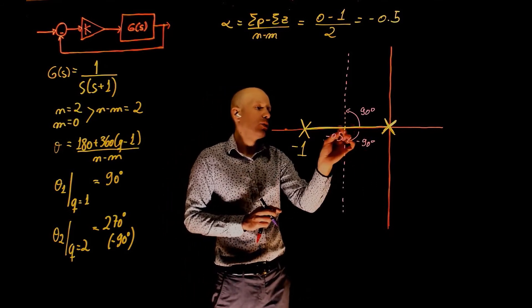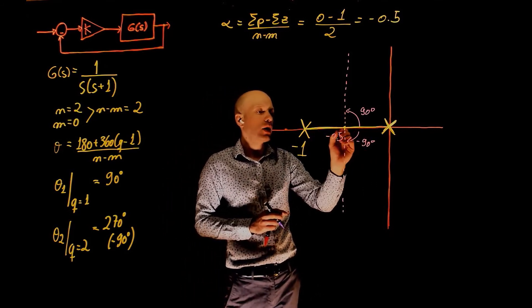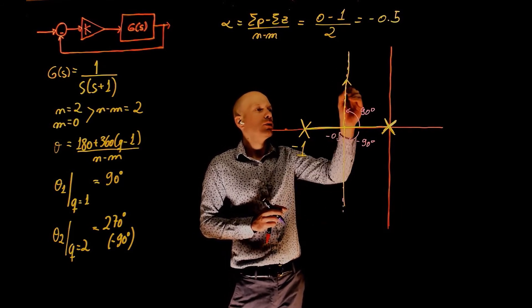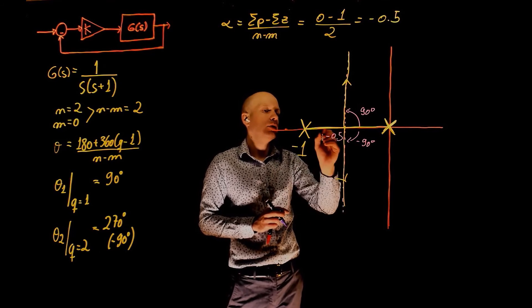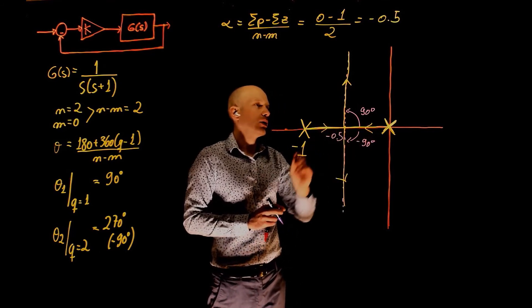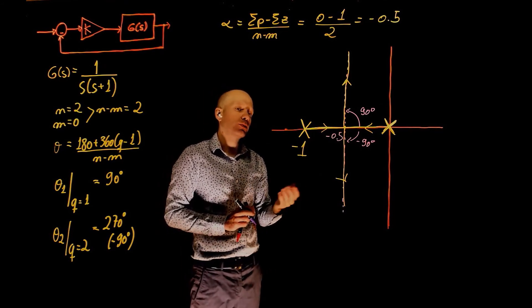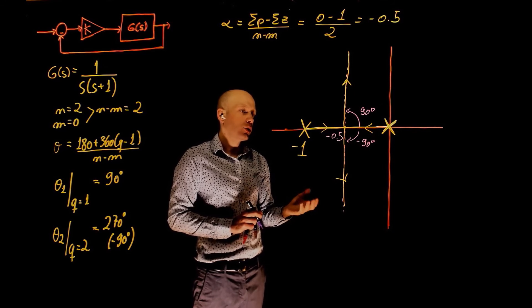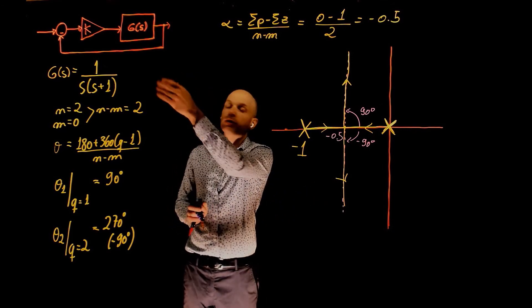This means that these two poles will come together at this point and will break away. One goes up, one goes down, one goes to plus infinity, the other one tends to negative infinity. This is now the root locus of the closed loop transfer function. This represents the location of the poles when you close this feedback loop.